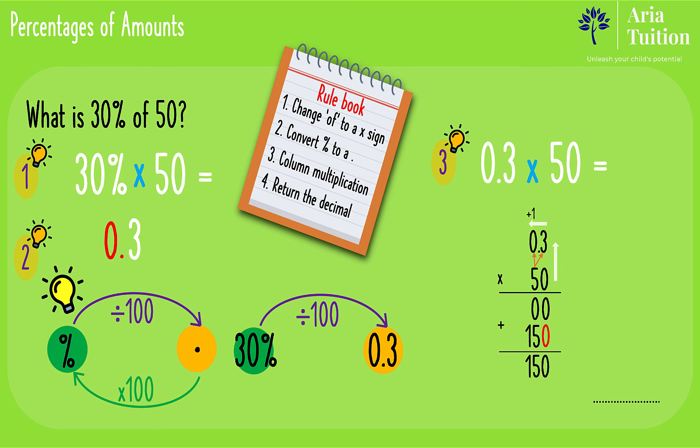Rule number four states that we return the decimal. Remember the multiplication sum showed 0.3. The decimal point is one decimal place to the left. Therefore in our final answer a decimal point is added one decimal place to the left, making 15.0 or 15.